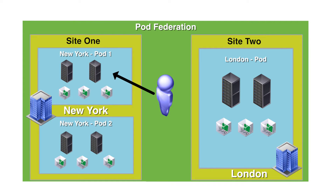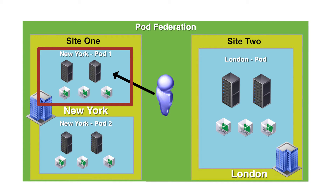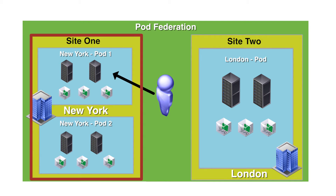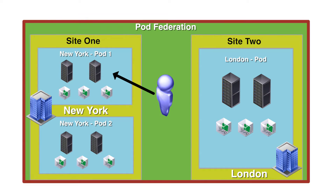By default, when a user requests a desktop or application from a global entitlement, View searches for an available desktop or application in the pools in the global entitlement. To satisfy a request, View searches local resources first, starting in the same pod that the user is connected to. View then extends the search to resources in the same site, and finally searches across the entire pod federation.